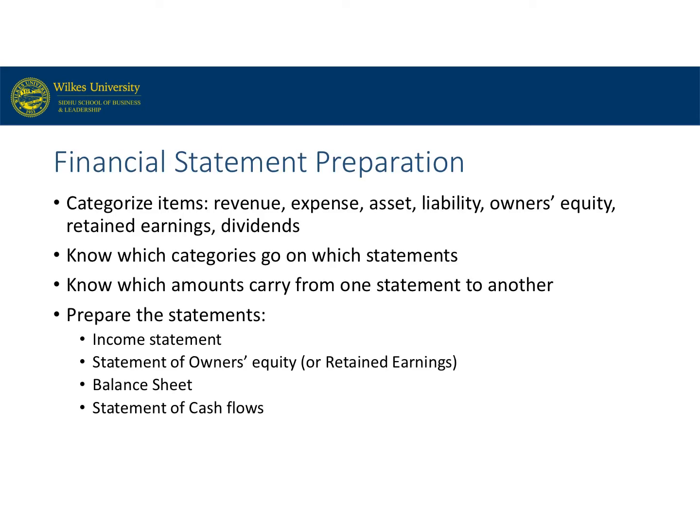When preparing an income statement, start by categorizing all of the information. Terminology is important. It's easiest to label each item as an asset, liability, equity, revenue, expense, dividend, etc. There are two parts to equity: the ownership part, which is common stock, and the earnings part, which is retained earnings — since it's the ownership retained in the business.